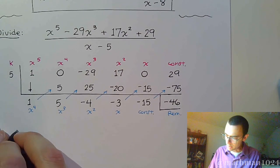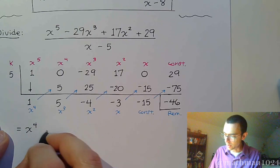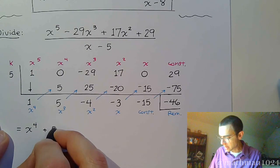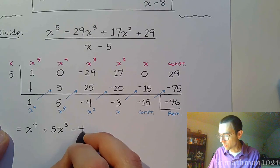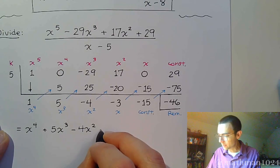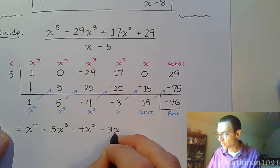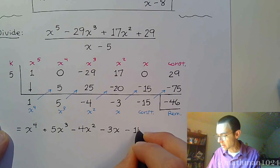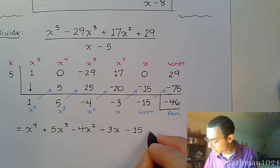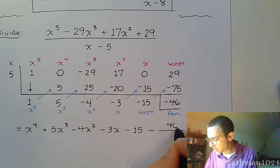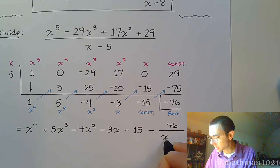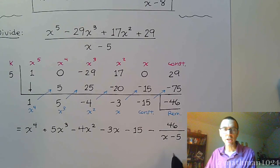So we end up with 1x to the 4th plus 5x to the 3rd minus 4x squared minus 3x minus 15. And then we can say minus 46 over the divisor x minus 5.